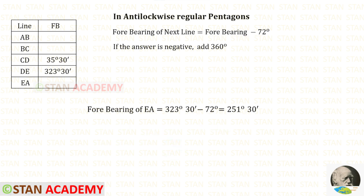Now let us find the forebearing of EA. 323 degrees 30 minutes minus 72 degrees gives us 251 degrees 30 minutes.